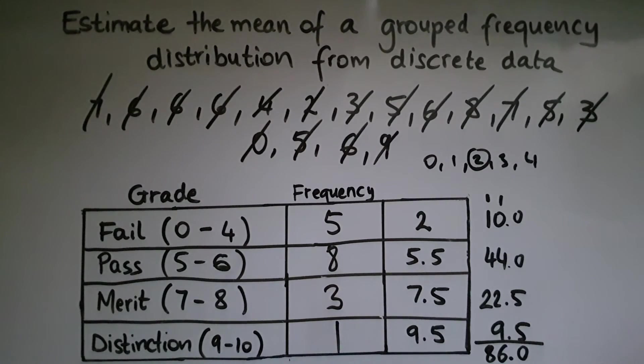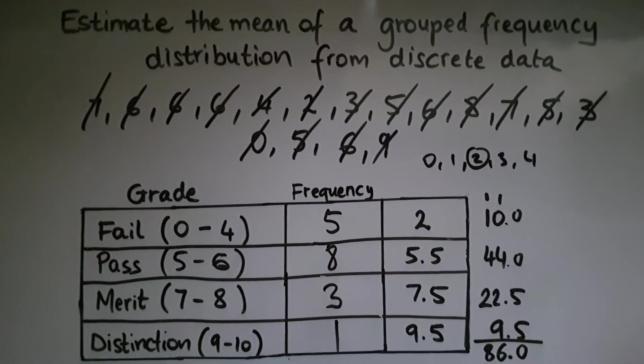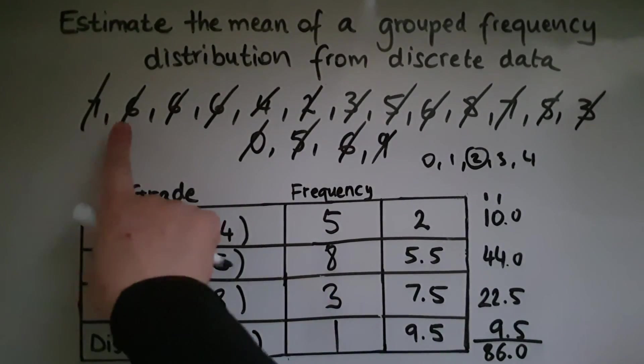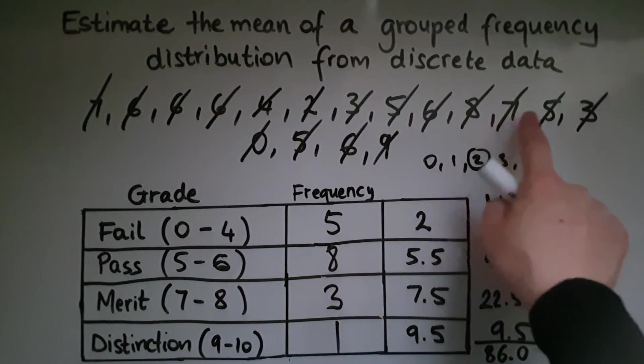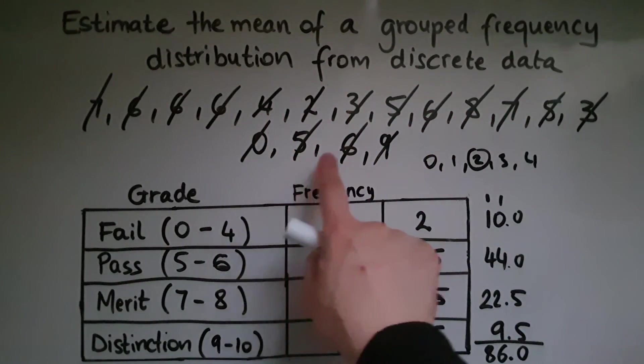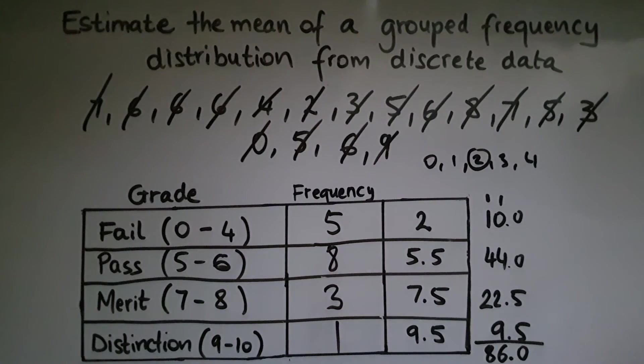But we still need to divide this by how many values we have. So we have 86 divided by 1, 2, 3, 4, 5, 6, 7, 8, 9, 10, 11, 12, 13, 14, 15, 16, 17. And this gives us 5.059.